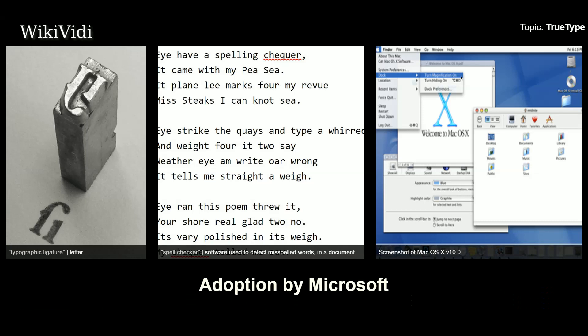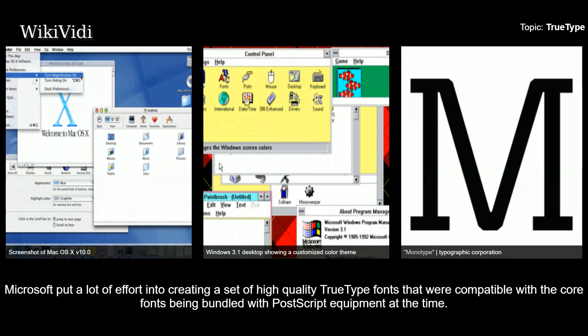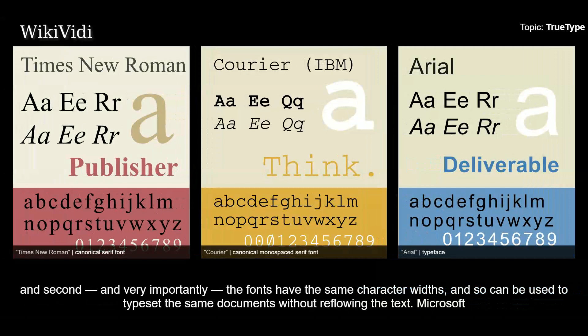Adoption by Microsoft. To ensure its wide adoption, Apple licensed TrueType to Microsoft for free. By 1991, Microsoft added TrueType into the Windows 3.1 operating system. In partnership with their contractors, Monotype Corporation, Microsoft put a lot of effort into creating a set of high quality TrueType fonts that were compatible with the core fonts being bundled with PostScript equipment at the time. This included the fonts that are standard with Windows to this day: Times New Roman, Arial, and Courier New. One should understand 'compatible' to mean two things: first, that the fonts are similar in appearance; and second, and very importantly, the fonts have the same character widths, and so can be used to typeset the same documents without reflowing the text.